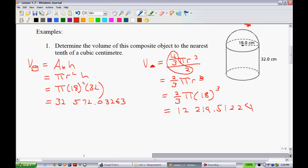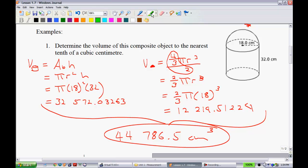Now, to get the volume total, all we have to do is we have to take these two amounts right here and add them together. And when you add them together, since they're asking to the nearest tenth, you get 44,786.5 centimeters. Since we're dealing with volume, of course, it should be cubed. That would be our final answer, just like that.